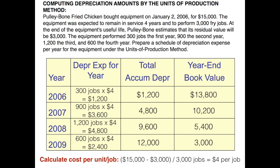So for 2006, for example, 300 jobs times the $4 gives us depreciation expense of $1,200 for that year. For 2007, $4 times the 900 jobs completed that year will give us $3,600 in depreciation expense.